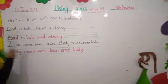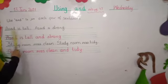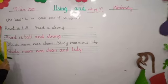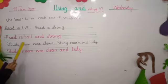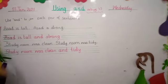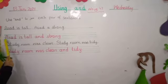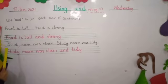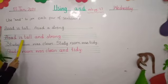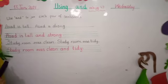Two sentences are given and we have to join them. For example: 'Asad is tall' and 'Asad is strong' — when we join them, the noun 'Asad' is not repeated. The result is: Asad is tall and strong.